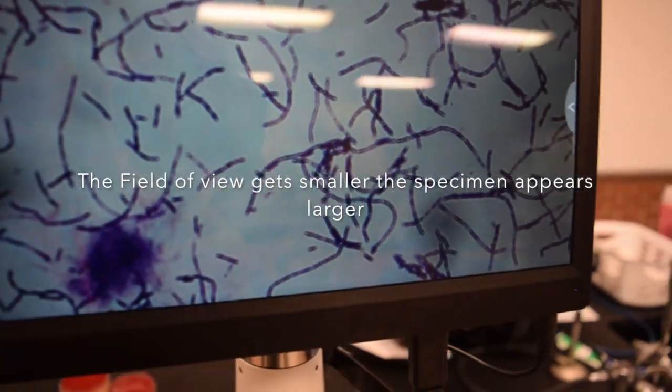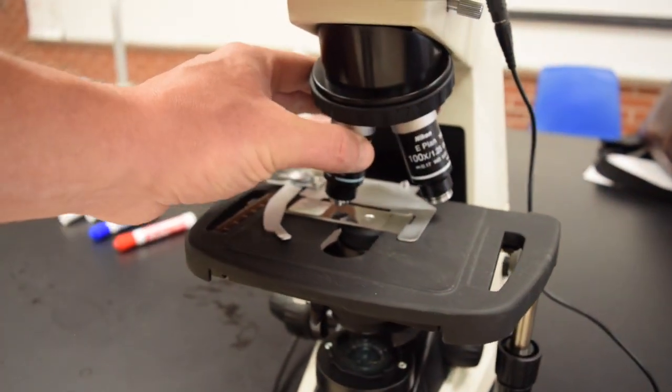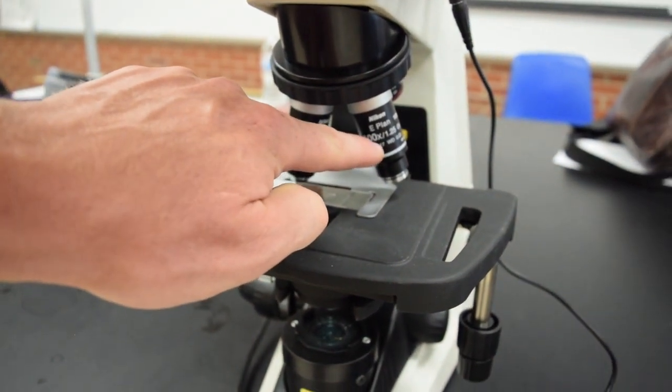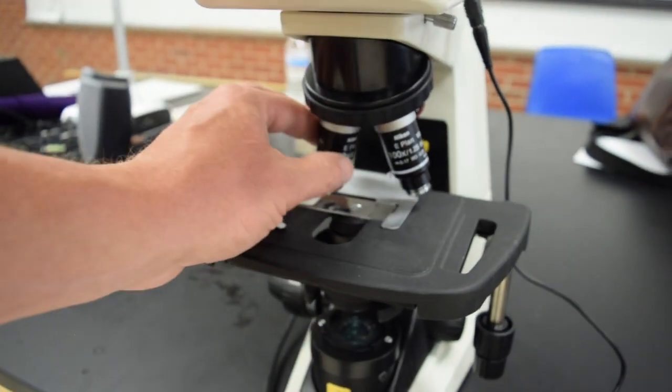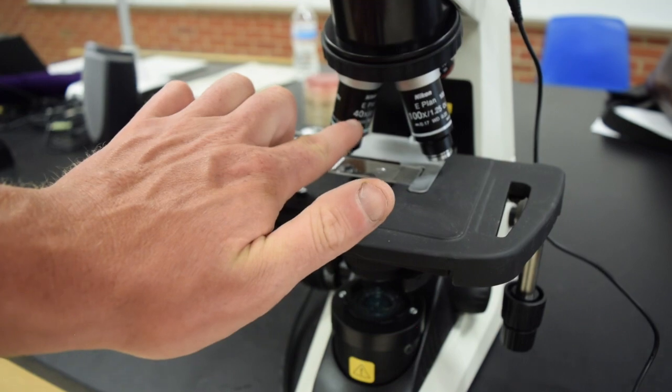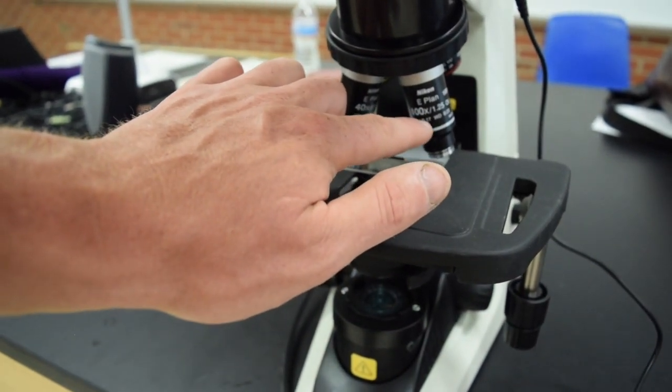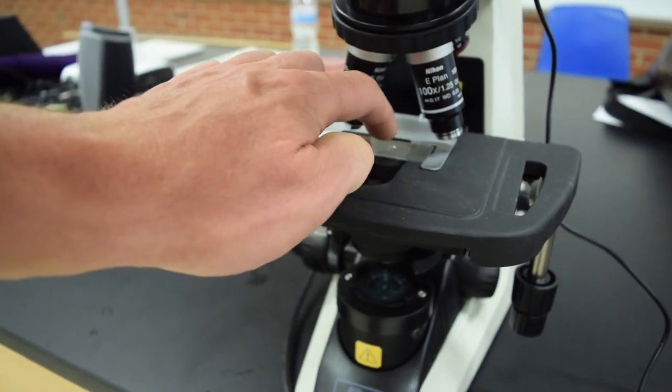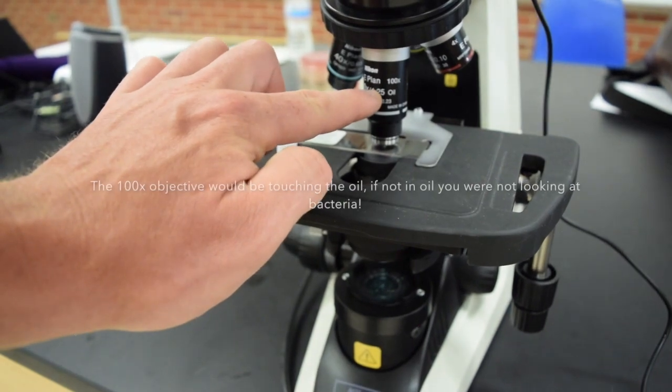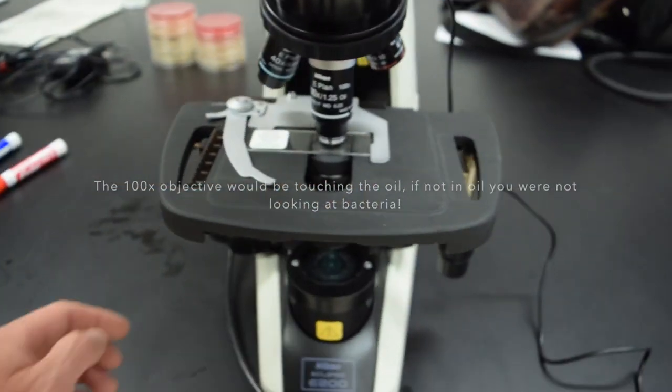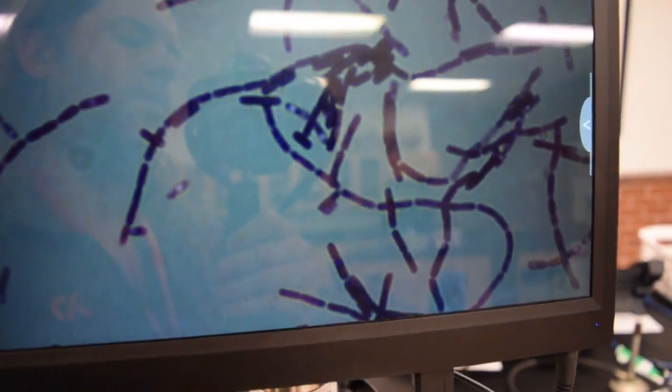I'm not going to use oil immersion, but these have that capability. This 100x objective says 'oil' right on the lens. When looking at bacteria and doing gram stains, you would move the 40x objective out of the way, add a couple drops of oil right to the slide, and then move that oil lens into the oil so the lens is actually touching the oil. From there, you would use the fine focus to view the bacteria.